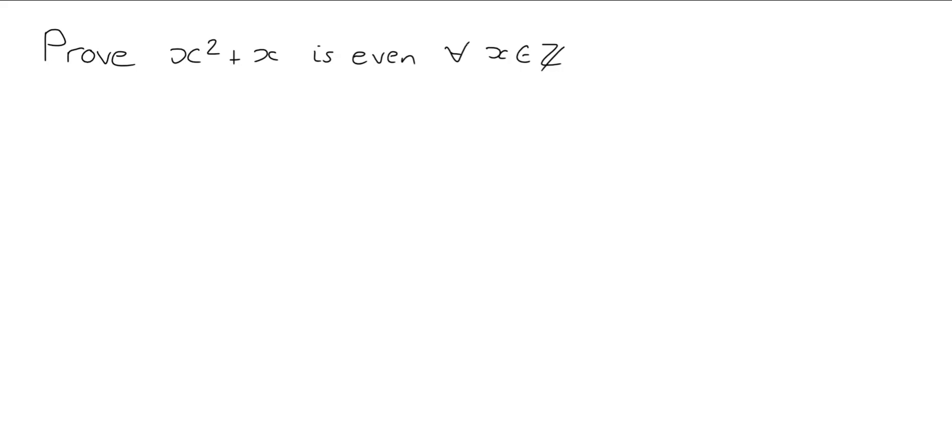That doesn't mean going through every single integer because that's impossible. The set of integers is an infinite set. So instead what we're going to do is break up the integers into two different sets and then in each of those cases we're going to show that x squared plus x is even. So what are these two cases we're going to split ourselves up into?